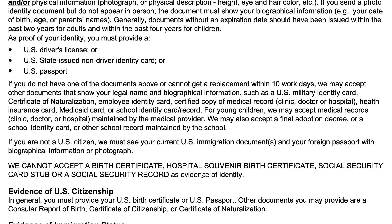To prove your U.S. citizenship, generally speaking, either a U.S. birth certificate or a U.S. passport. You can also provide a consular report of birth — this is for U.S. citizens born in a foreign country — instead of receiving an official birth certificate. You might also use a certificate of citizenship or a certificate of naturalization.